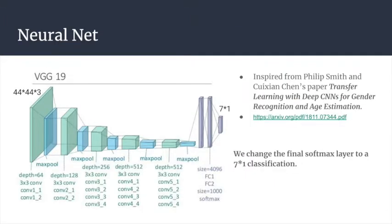The neural network we're using is VGG-19. It receives three-channel RGB pictures as inputs. It contains 16 convolutional layers, 5 pooling layers, 3 fully connected layers, and a softmax layer. We are inspired by Philip Smith and Cui Xian Chen's paper, 'Transfer Learning with Deep CNN for Gender Recognition and Age Estimation.' This CNN structure has been proven to yield promising results in computer vision, especially facial recognition. We keep the structure and change the final softmax layer into a 7-class classification.